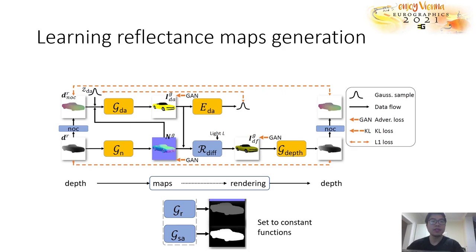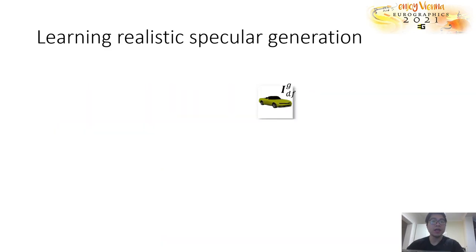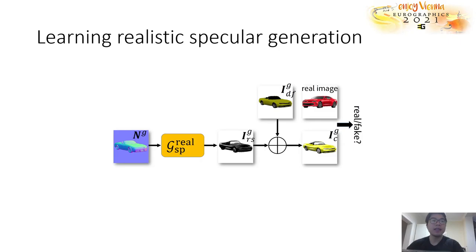This clearly produces unrealistic specularity in the final images. So, to add further realism, we train another module, G-realistic-specular, to generate a realistic specular map, such that blending this generated realistic specular map with the generated diffuse image leads to a composite image that satisfies the realistic images discriminator. This network is also trained with adversarial loss and cycle consistency loss.